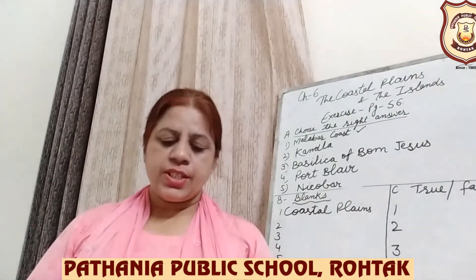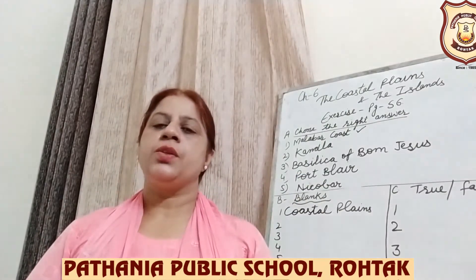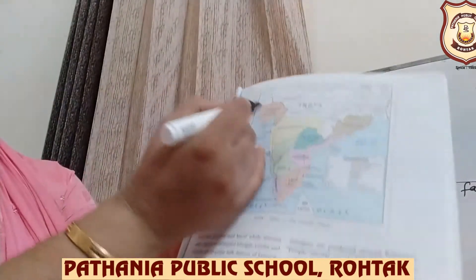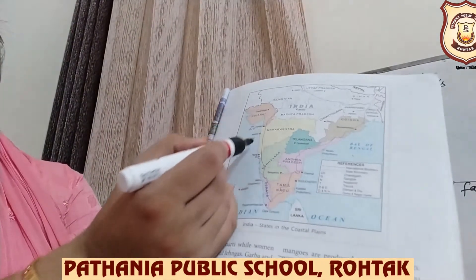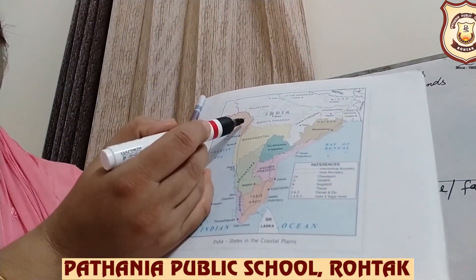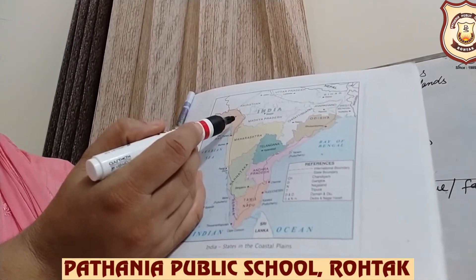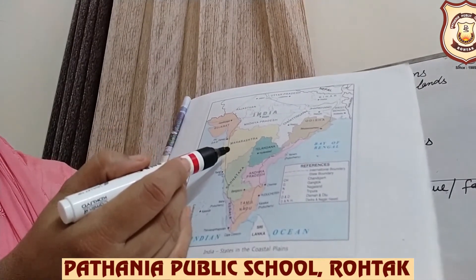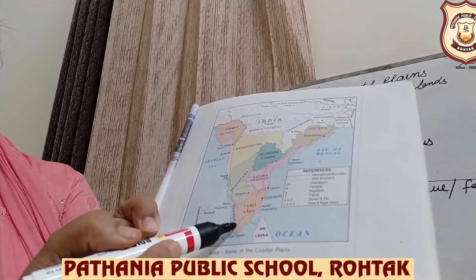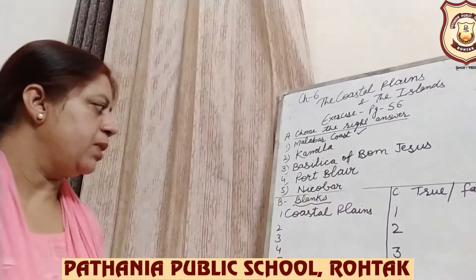Number 2: The western coastal plains stretch from Rann of Kutch to dash. You can see western coastal plains here — Rann of Kutch is in Gujarat. The western coastal plains stretch from Rann of Kutch to Kanyakumari. So you have to write 'Kanyakumari.'